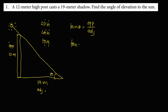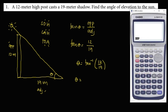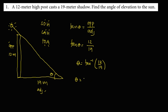Substitute the values: tangent theta is equal to the opposite, that's 12 meters, over the adjacent, that's 19 meters. To solve for theta, we use inverse tangent — open parenthesis, 12 divided by 19, close parenthesis. So theta is equal to 32.28 degrees. This is the angle of elevation.